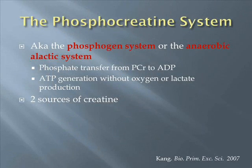This energy system, also known as the phosphagen system, refers to the transfer of a phosphate from a creatine molecule to adenosine diphosphate to form adenosine triphosphate. You may also hear this system referred to as the anaerobic alactic system, as ATP is generated without oxygen or the production of a lactate byproduct in this process.